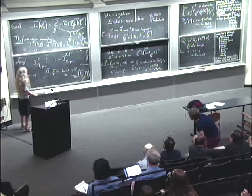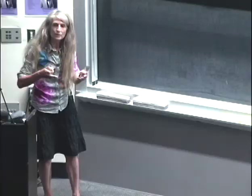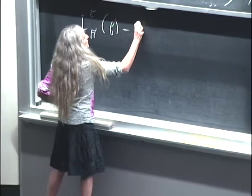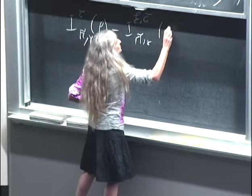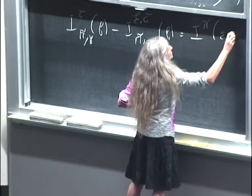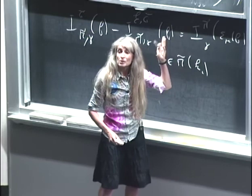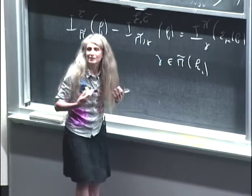We have a Paley-Wiener theorem. It's because the function is defined using a trace relation. Here it is not a threshold relation — there is a relation with the orbital integrals. This is local. At the non-Archimedean place, it is a matter of germs. At the Archimedean place, there are no germs, so there is no obvious approach.